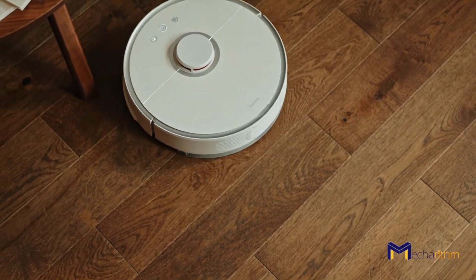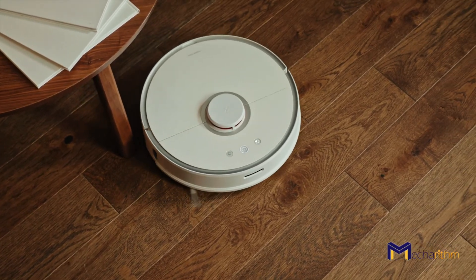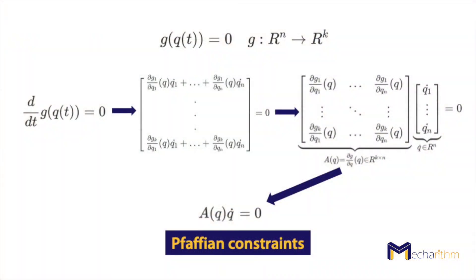If the robot is moving and its configuration is time-dependent, the question is how holonomic constraints restrict the velocity of the robot. If we take g as a function that maps the n-dimensional space of joint variables to the k-dimensional space of holonomic constraints, then differentiating both sides with respect to time and rearranging the equations, we get the velocity or Pfaffian constraints in the form A(q) * q-dot = 0, where q-dot_i is the velocity of joint i.